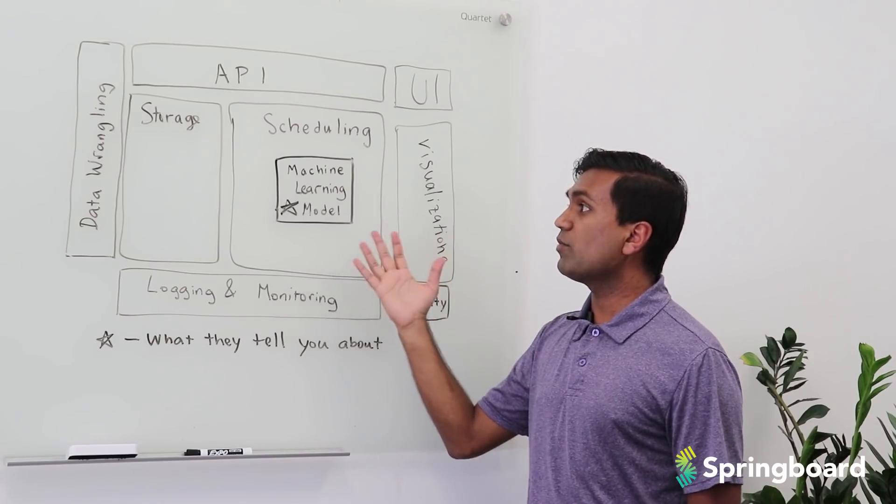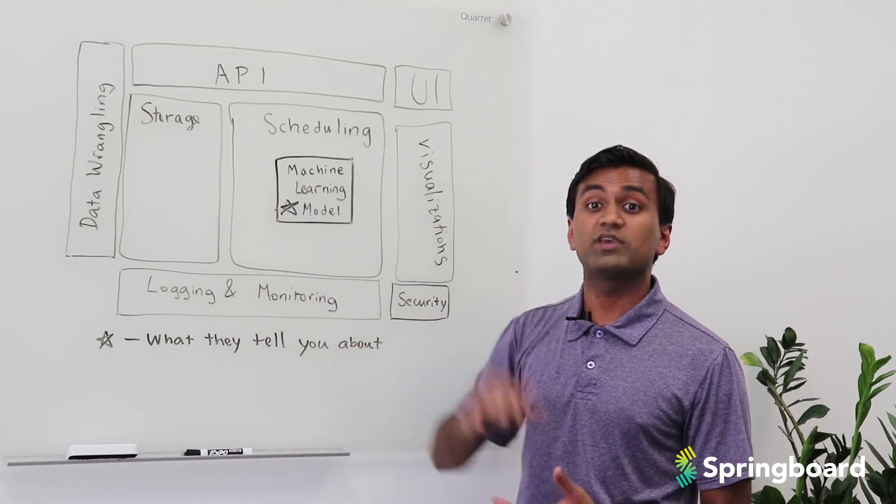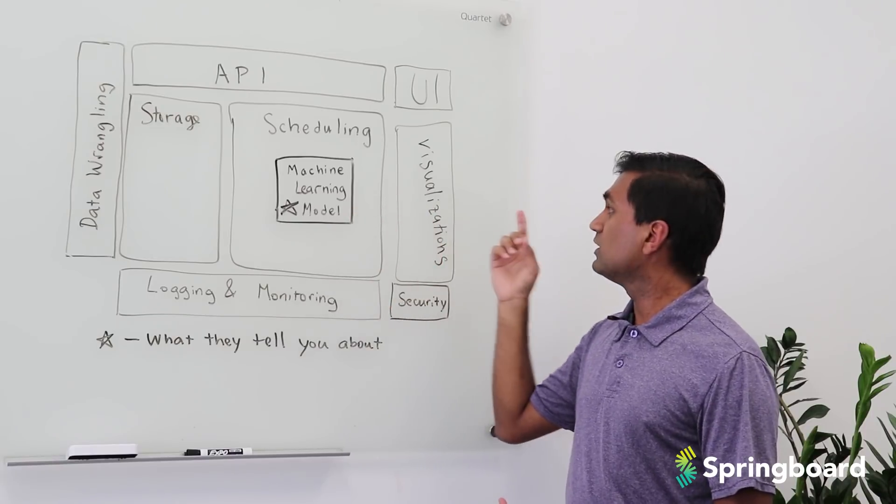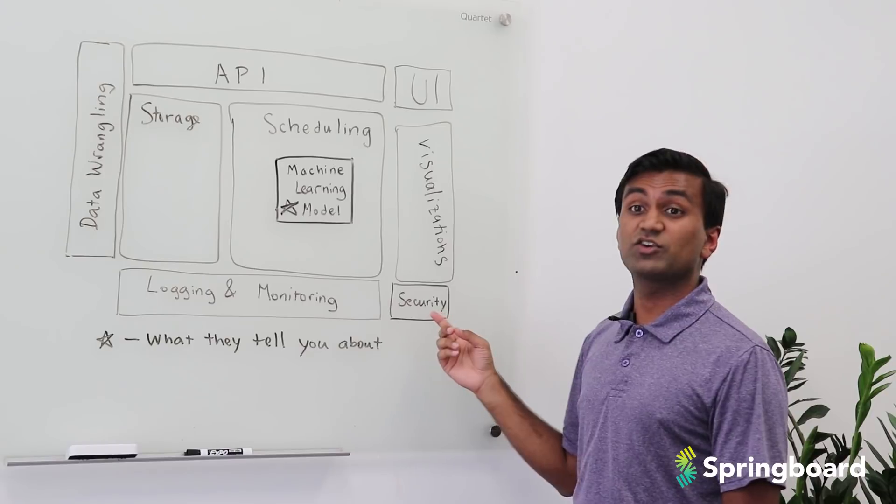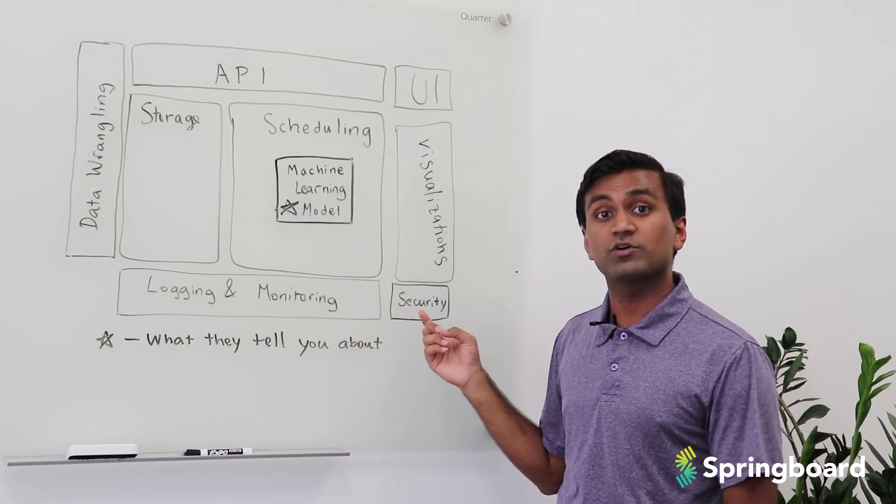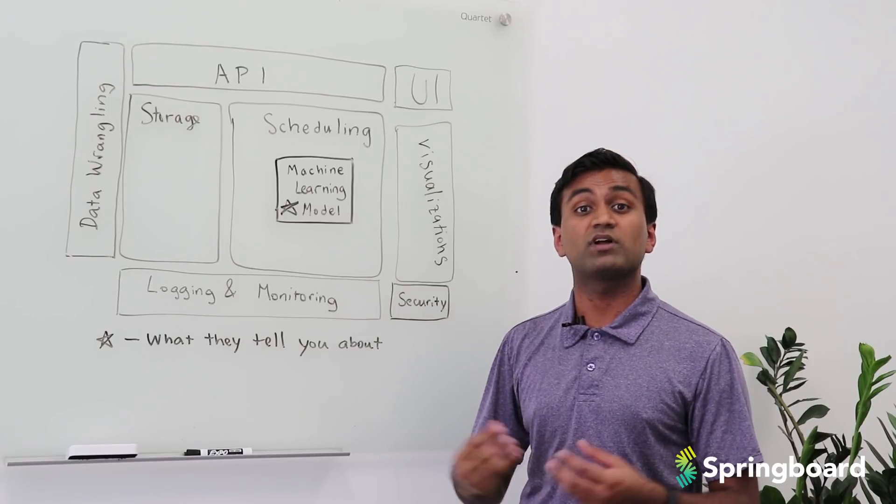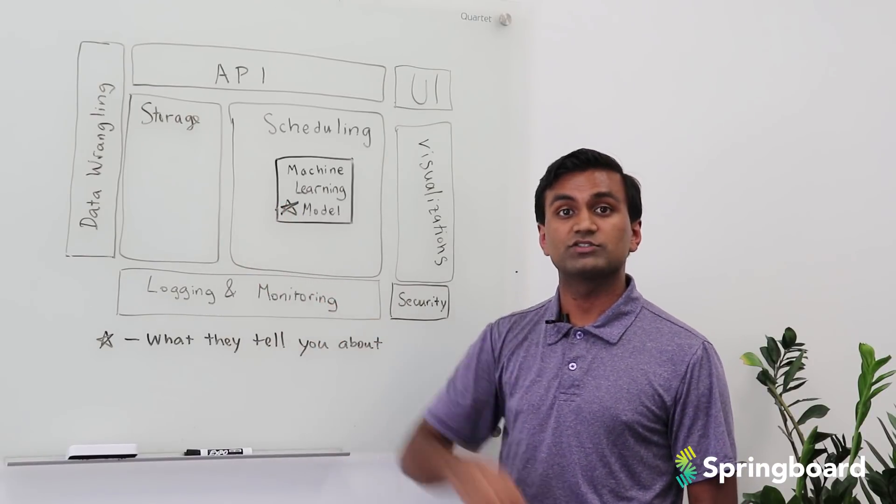And around this ML model, we have things like data wrangling, storage, the API that sits on top of the model, a UI that might be leveraging the model, visualizations of the model results themselves, security of the data input and data output of the model, logging and monitoring to make sure that the model is staying relatively consistent and accurate, and lastly, storage of the model of where it's being stored and where the results themselves are being stored.